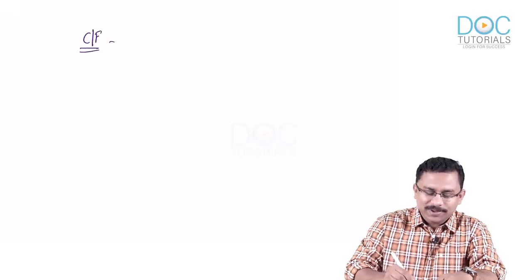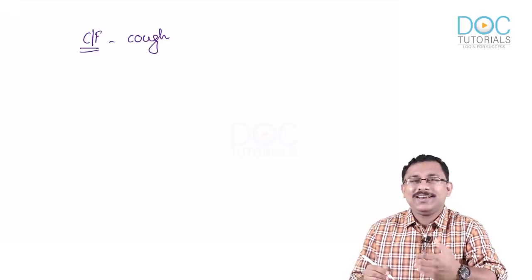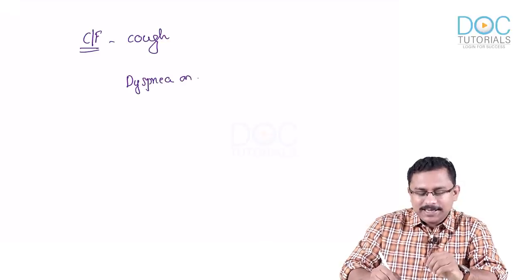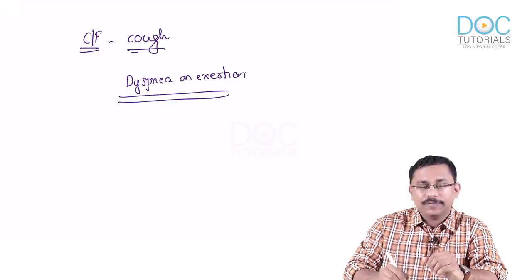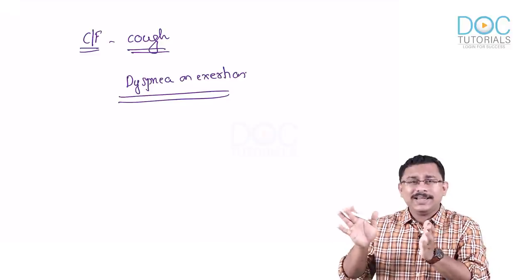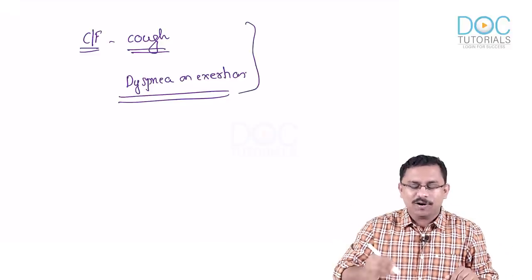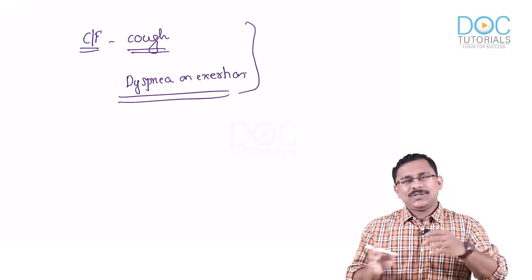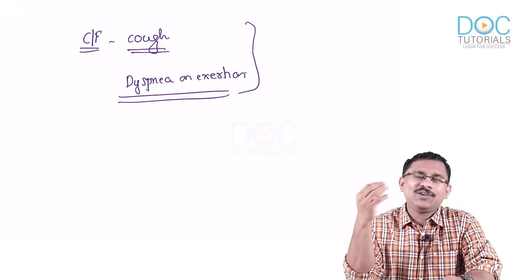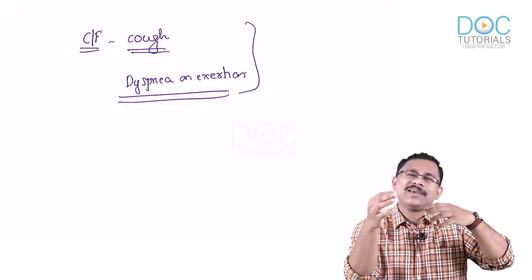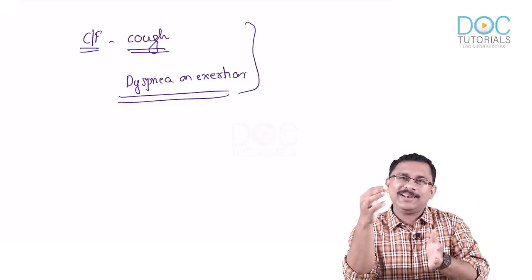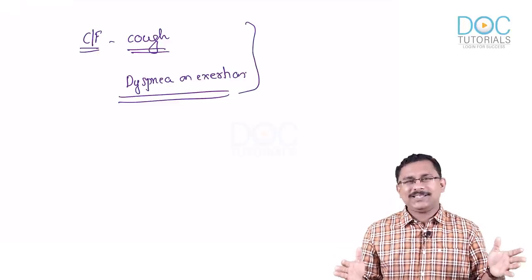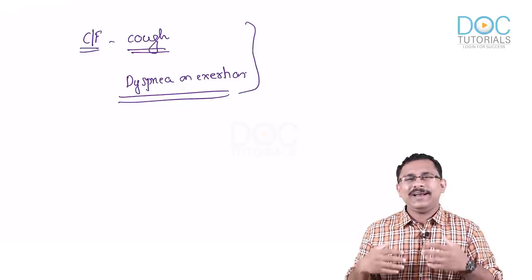IPF patients present with a dry cough and dyspnea on exertion — the two most important clinical features. In fact, these two features apply to almost all ILDs. IPF will not have many extra-pulmonary symptoms, unlike ILDs associated with connective tissue diseases. The presentation is a slowly progressive dry cough and exertional breathlessness.